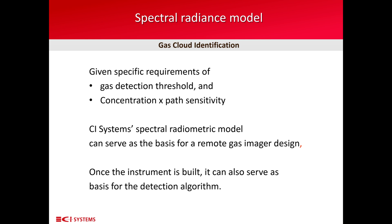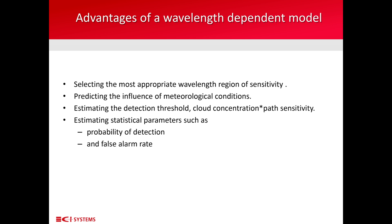Given specific requirements of gas detection threshold and concentration times path sensitivity, CI Systems has developed a spectral radiometric model that can serve as the basis for a remote gas imager design. Once the instrument is built, this model can also serve as the basis for the detection algorithm. The advantage of a wavelength-dependent model is that it allows the selection of the best wavelength region of sensitivity for the specific gas in question. It also allows prediction of the influence of meteorological conditions, estimation of the detection threshold, and estimation of statistical parameters such as probability of detection and false alarm rate.